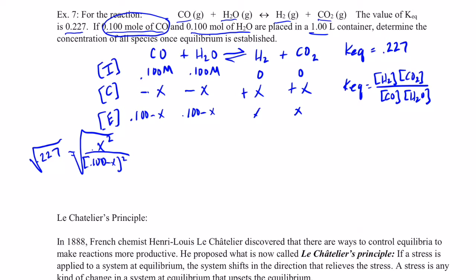So the square root of 0.227 is 0.476 equals the square root of x squared is x, and the square root of 0.1 minus x quantity squared is 0.1 minus x.